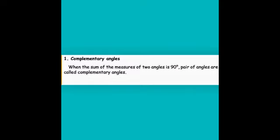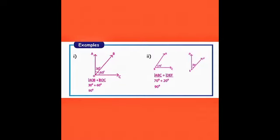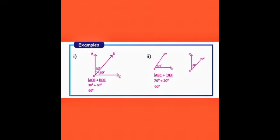Let us see examples. In the first picture, we have two angles: 30 degrees and 60 degrees. If you add them, 30 plus 60 equals 90 degrees. Therefore, 30 and 60 are called complementary angles. In the second example, we have 70 degrees and 20 degrees. Adding them gives 90 degrees, so 70 degrees and 20 degrees are also called complementary angles.